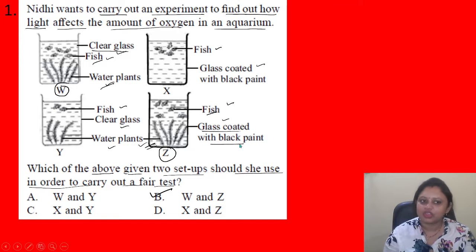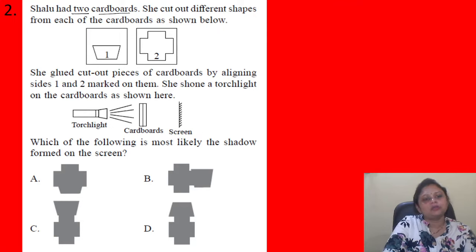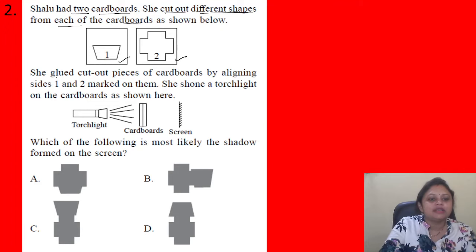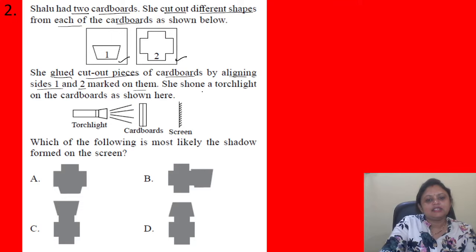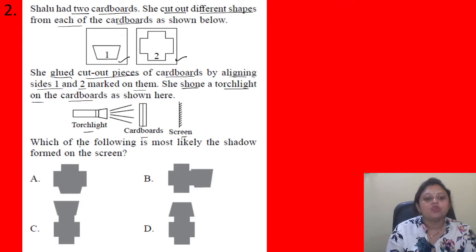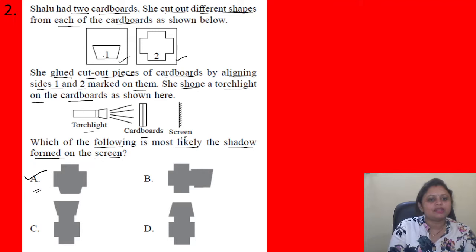Next question: Salu had two cardboards and cut different shapes from each cardboard. She glued the cut-out pieces by aligning sides marked one and two. Then she shone a torchlight on the cardboard as shown — torchlight, cardboard, and screen. Which of the following is most likely the shadow formed on the screen? Since one and two are aligned, they overlap to give rise to the combined shadow image.